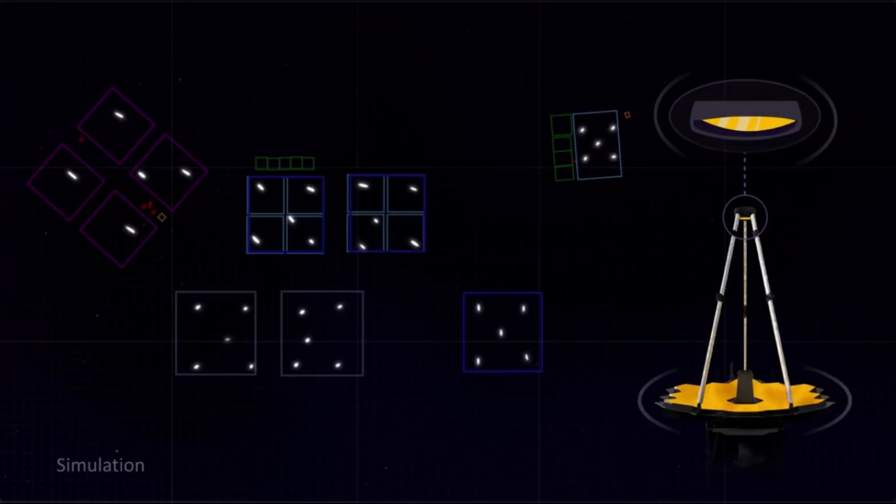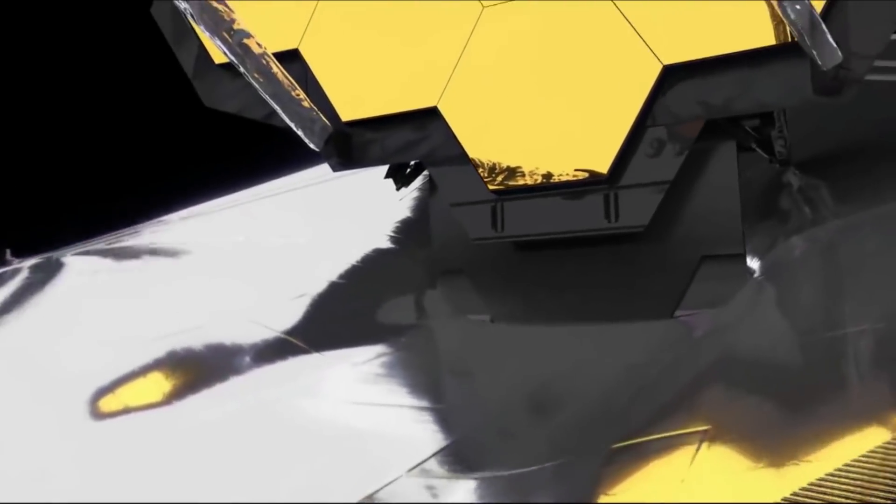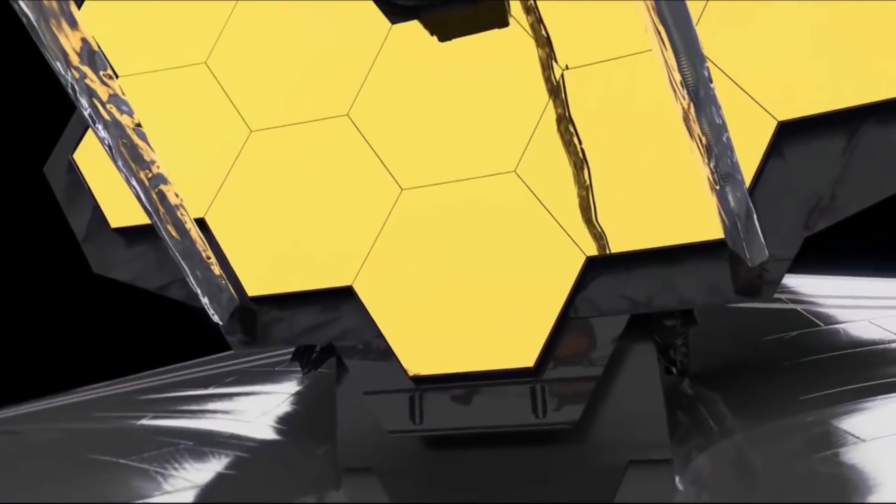Following this, Webb's final alignment step will begin, and the team will adjust any small residual positioning errors in the mirror segments. Each of these three instruments that NASA is currently aligning are key to the future operations and success of Webb.